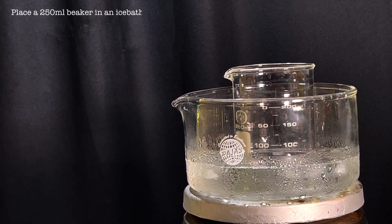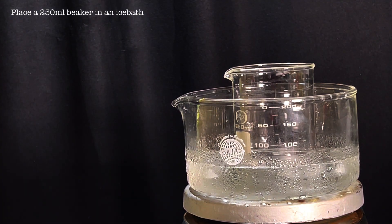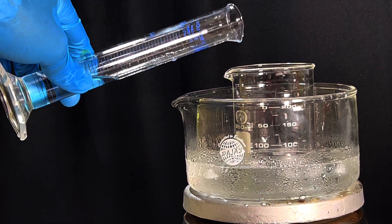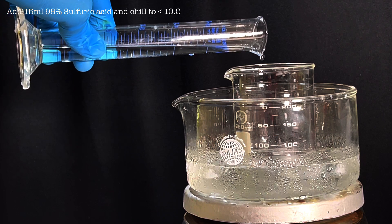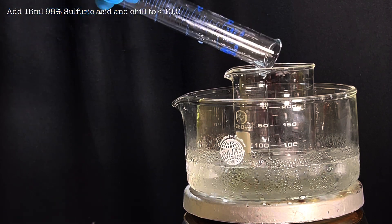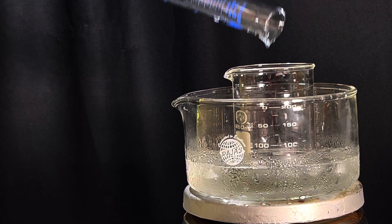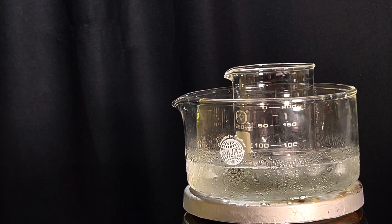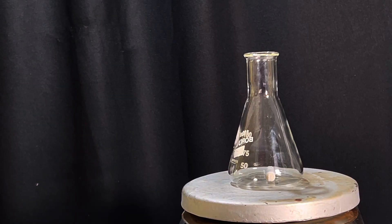Start by placing a 250 ml beaker in an ice bath. Add 15 ml of concentrated 98% sulfuric acid to the beaker. Keep the beaker in the ice bath and chill the acid to below 10 degrees C.